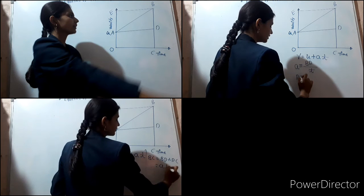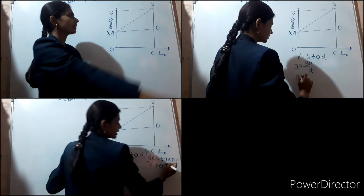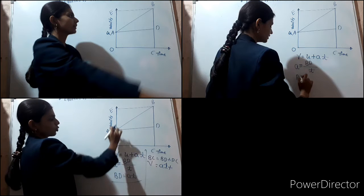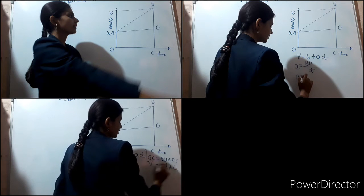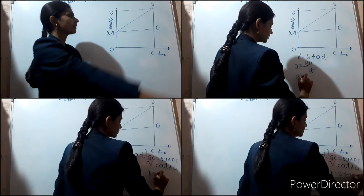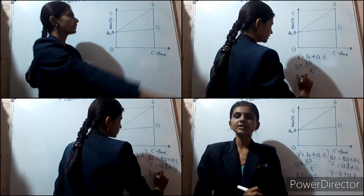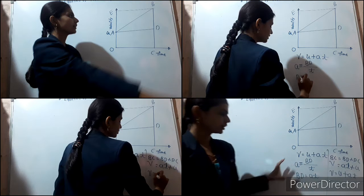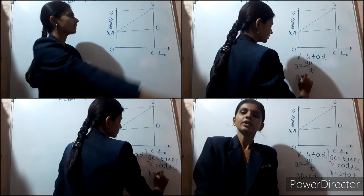bd means at. bc is the final velocity v. So v is equal to at plus cd. cd is none other than oa, and oa is the initial velocity, denoted by u. So v is equal to u plus at. This is the first equation of motion.